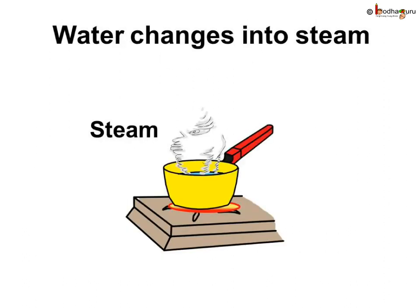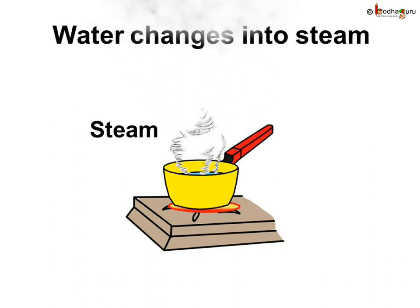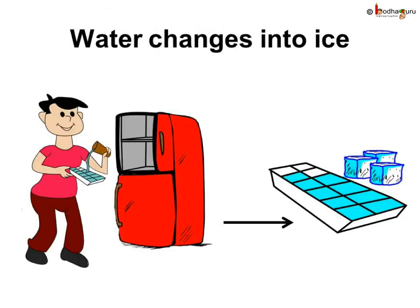Matter in the form of solid, liquid, and gas can change its state when heated or cooled. Like water is a liquid, but when water is heated till it boils, it changes into steam, which is a gas. And if water is cooled in a refrigerator, it changes into ice, which is a solid. The molecules of water remain the same but the space between the molecules changes.